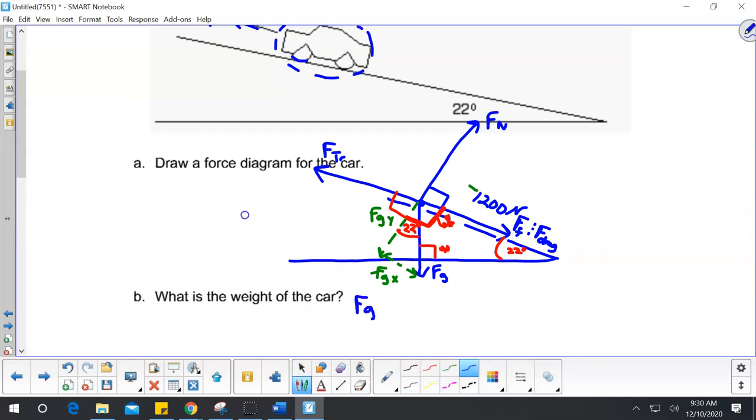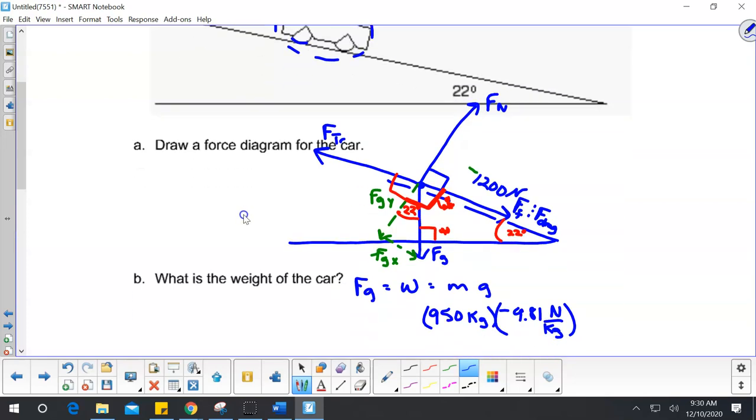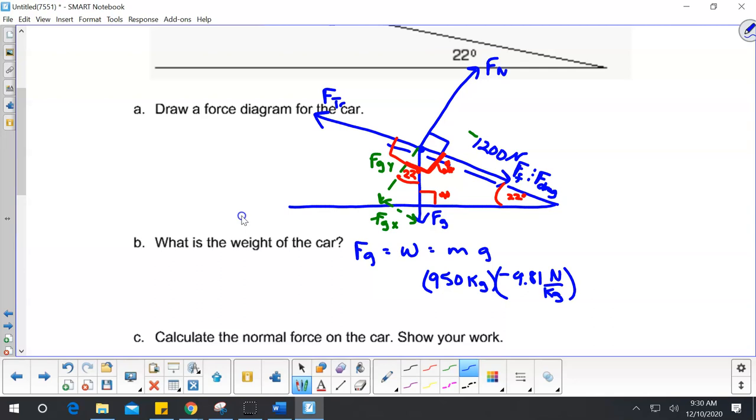So it looks like we have 950 kilograms times that negative 9.81 newtons per kilogram. That's the force that gravity pulls everything to the earth. And that would give us that the weight is a negative 9,319.5 newtons. So that's what I got for an answer.